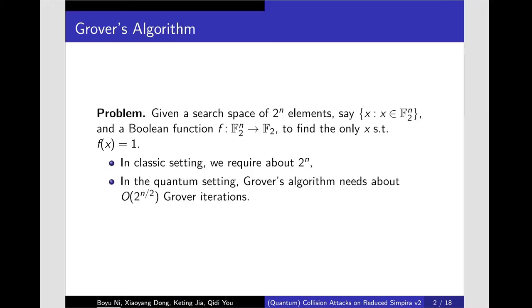Now, we describe the problem which can be solved by the Grover algorithm. Given a search space of 2^n elements and a boolean function f.